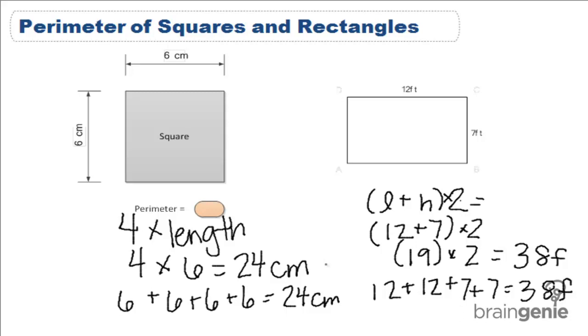So to recap, for squares, we just take the length of one side and multiply by 4. And for rectangles, we take our length plus our height and we multiply that number by 2.